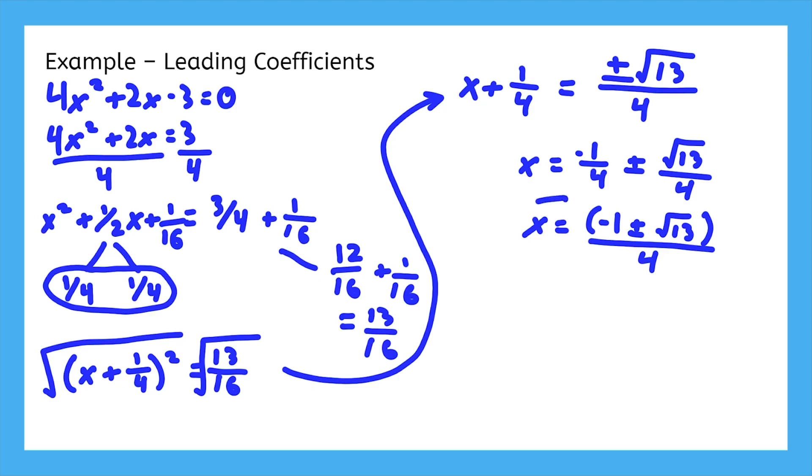The solutions are negative 1 plus the square root of 13 divided by 4, and negative 1 minus the square root of 13 divided by 4. That's a mouthful. This is why completing the square is so hard with leading coefficients. You end up with a whole mess of fractions.